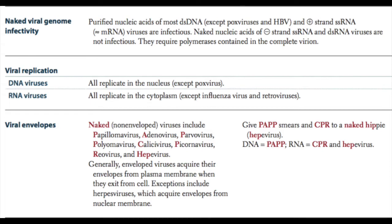Retroviruses have two identical single-stranded RNA molecules, and since they have two copies of their genome, they are considered diploid. As far as replication is concerned, all DNA viruses replicate within the nucleus except poxvirus, because poxvirus has its own replication machinery. All RNA viruses replicate in the cytoplasm except influenza virus and retroviruses.